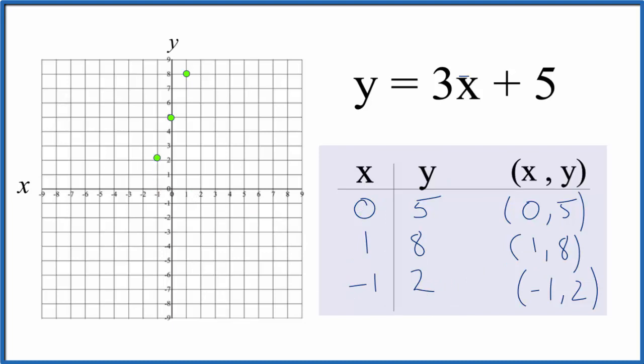You can see they all line up. Let's put a line through that. Let's put arrows on that to show that this goes to infinity. So this is the line for the linear equation y equals 3x plus 5.